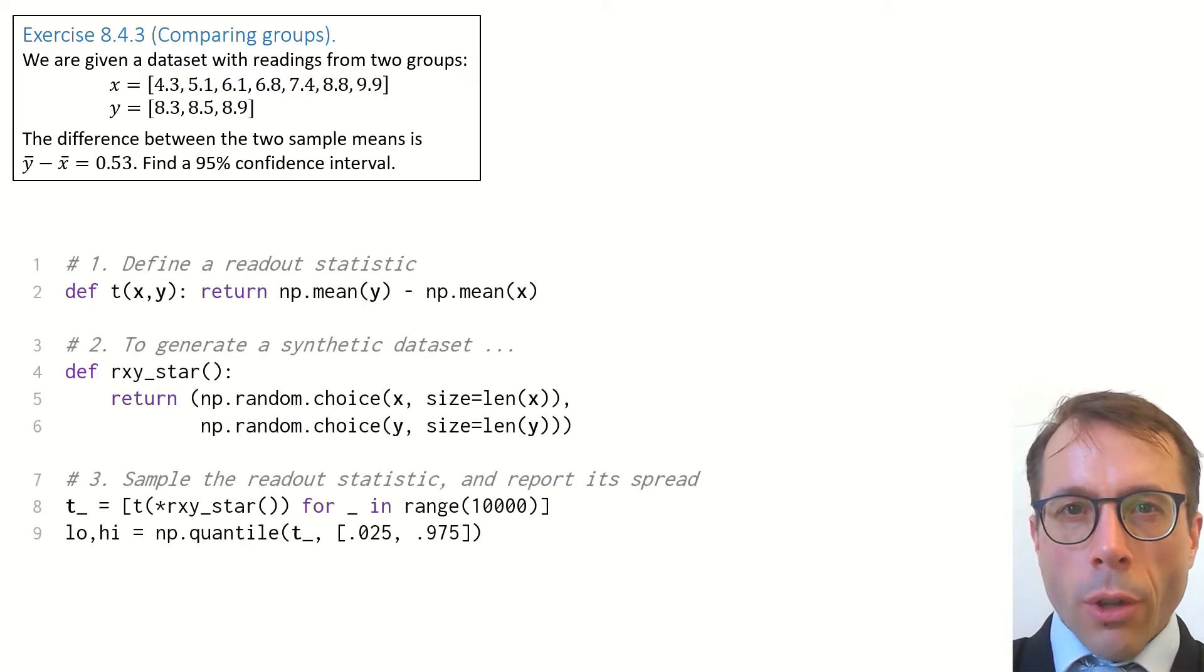Here's the code. It's the usual three-step procedure for finding confidence intervals. Steps 1 and 3 are exactly the same as before. What's different is step 2, generating a synthetic data set.